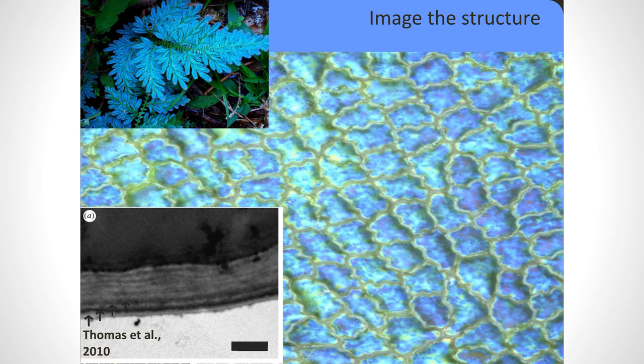You can then start imaging the structure responsible for producing that colour. In Selaginella, the iridescence is caused by the cell wall, specifically what we now know to be a multi-layer structure. You will have seen multi-layer structures before — if you've ever seen oil on water and seen that rainbow effect in a puddle, that's exactly what we think is happening here. Multi-layer structures involve materials of two different refractive indices that interact with light to different extents, and that interaction causes bending of light, splitting it at different angles.